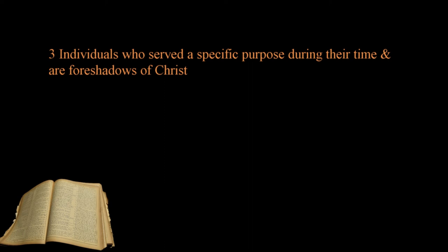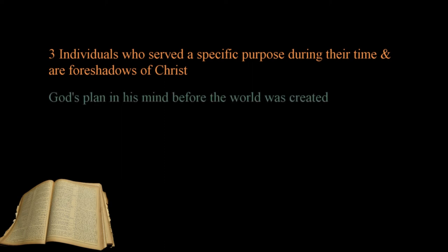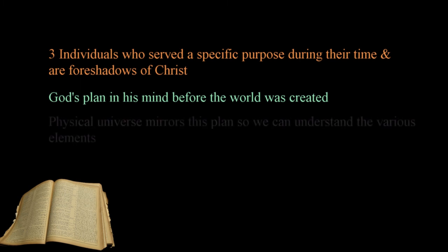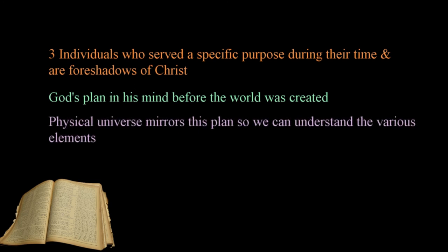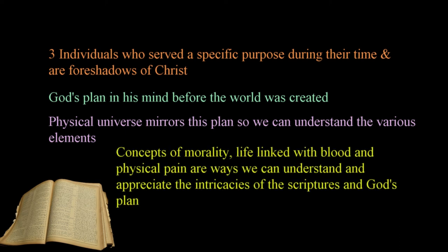In this lesson, we'll take a look at three individuals who served a specific purpose during their own time, but are also used as a type or foreshadow of Christ. God's plan to save mankind was in his mind before the world was created, and he modeled the physical universe in such a way that mirrored this plan. This provided a backdrop of particular objects or processes that we would be able to understand and relate to — concepts of morality, life linked with blood, sacrifice, physical pain, and others, which when placed in a spiritual context complement the scriptures and the plan for salvation.